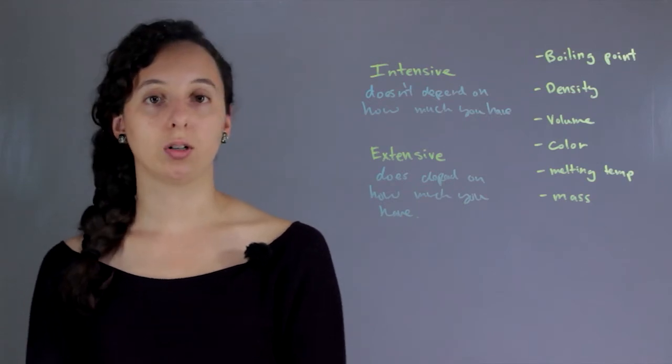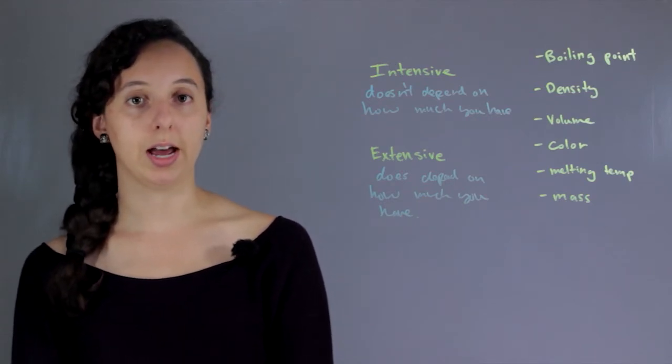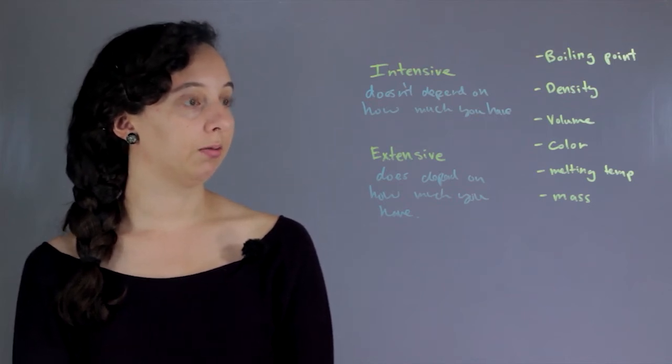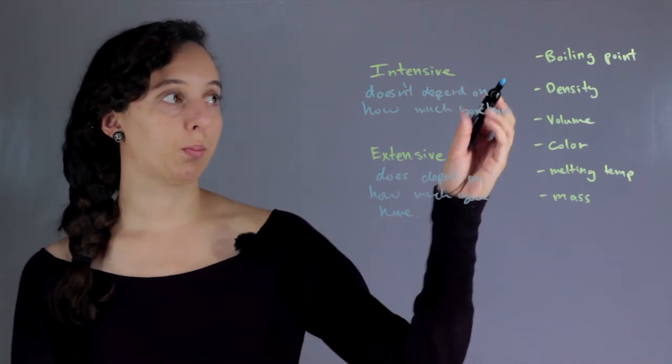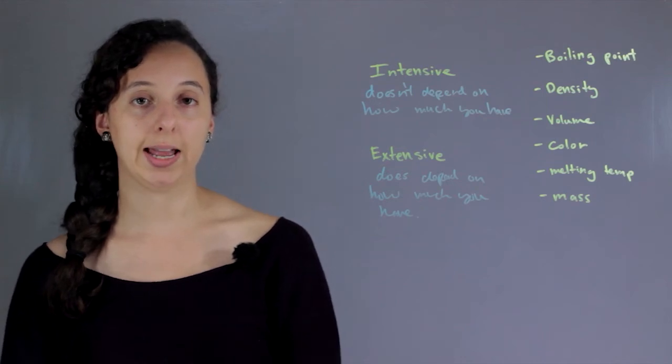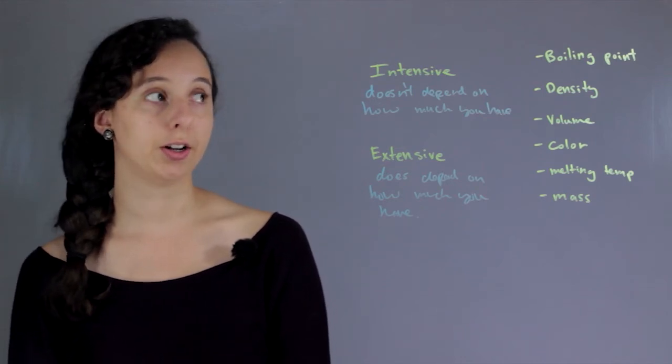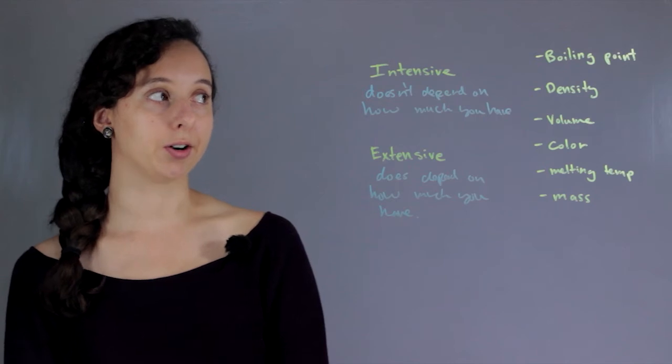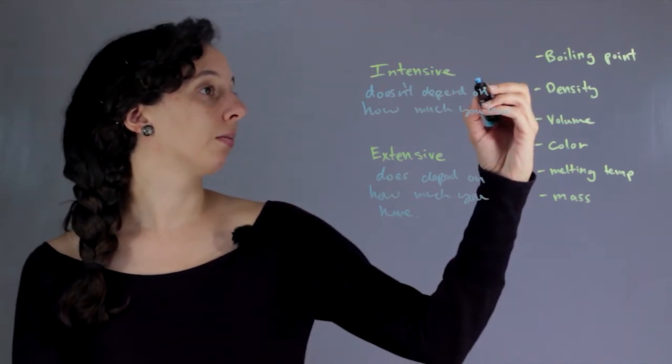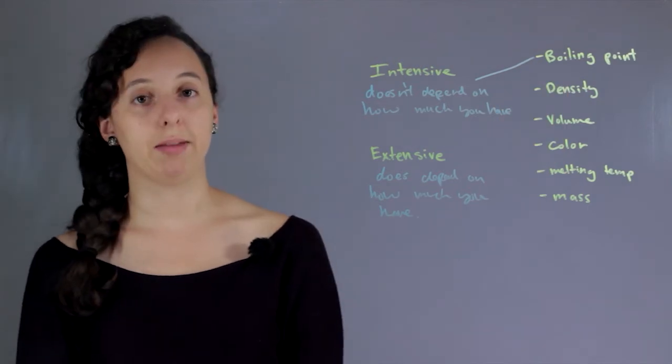Okay, so let's go through a few examples so that this concept is clear. So boiling point, intensive or extensive? Well, no matter if you're just boiling a tiny little amount of water or a huge 10 liter jug full of water, they're both going to boil at 100 degrees Celsius, which means this is intensive. It doesn't matter how much you have.